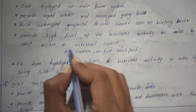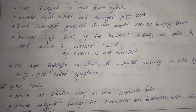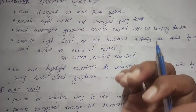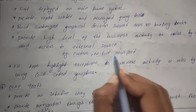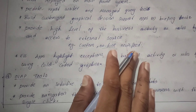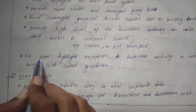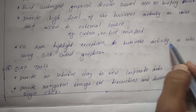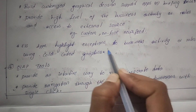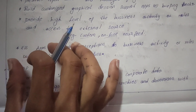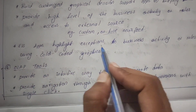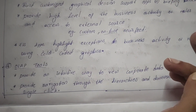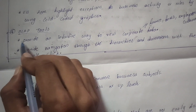EIS provides a high level of business access to internal sources and can also access external sources such as customer feedback, online news feeds, and other external data. EIS highlights exceptions to business activity using color-coded graphics.